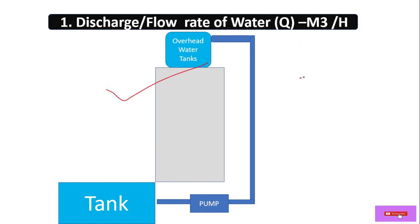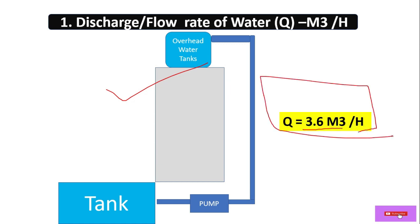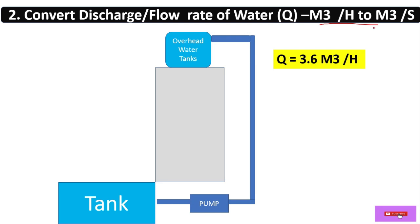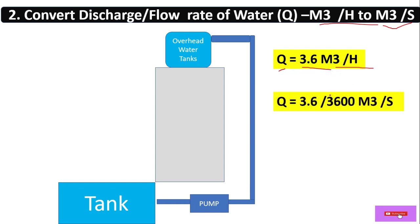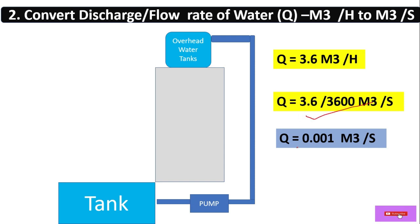In this scenario, let's take Q equal to 3.6 cubic meters per hour. Now convert this to cubic meters per second: divide 3.6 by 3600 (which is 60 × 60), and it becomes 0.001 cubic meters per second. So Q = 0.001 m³/s.